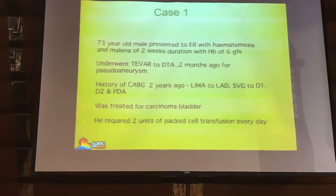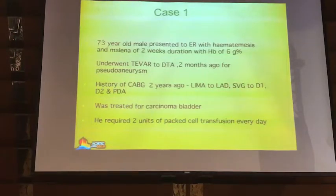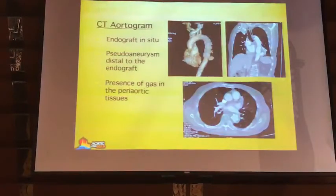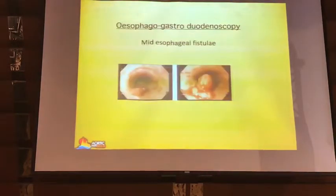The first patient had a TEVAR done for a descending thoracic aneurysm. He was a moribund patient, getting two units of blood every day. He had previous bypass surgery with the LIMA and a saphenous vein graft. This was his CT angiogram. You can see the presence of gas in the perigraft tissues and the aneurysm bulging out. This is the PET scan, which shows evidence of infection. And the gastroduodenoscopy showed an aortoduodenal fistula.